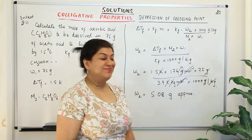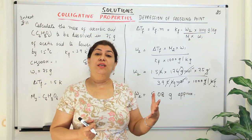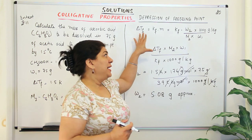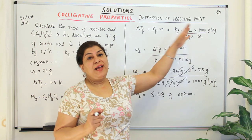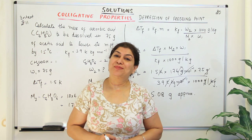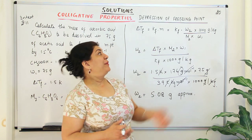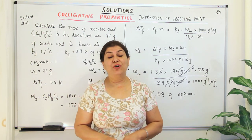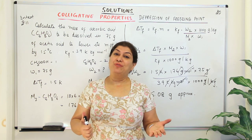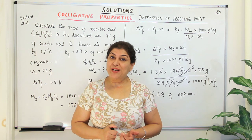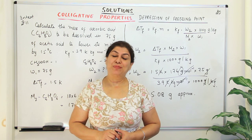So that's your answer — 5.08 grams. When solving numerical problems, always identify what is required first, then see what is given, and work out what you need to calculate to get there. I hope this clarified the concept of depression of freezing point. In the next video, we'll move on to the next colligative property: osmotic pressure. If you found the video helpful, please give it a thumbs up, subscribe, and keep returning for more chemistry videos. Thank you and bye-bye!